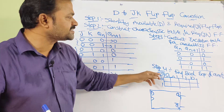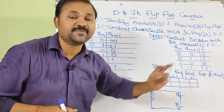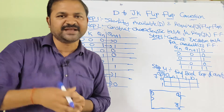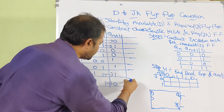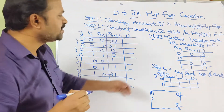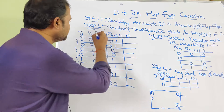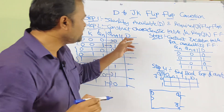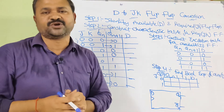Step 4 is to find the Boolean expression for the available flip-flop, that is the D flip-flop. To get the Boolean expression, we need to add one more column — the D column — and based upon the excitation table we fill this column. Here we have Qn and Qn+1, and D is nothing but Qn+1.